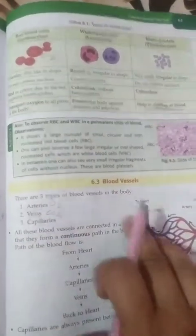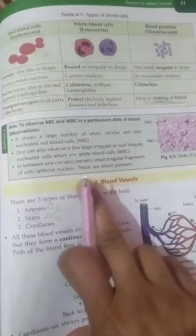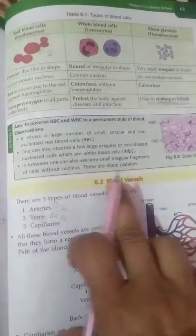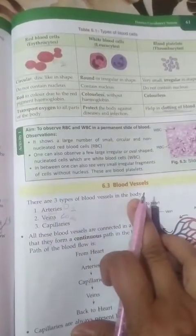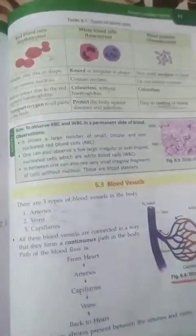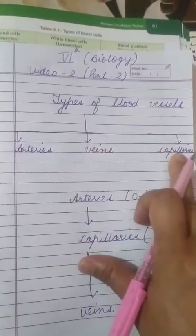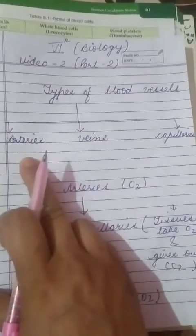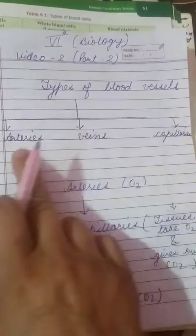Now we will do the next topic, that is blood vessels. Blood vessels are also a part of the human circulatory system. There are 3 types of blood vessels present in our body: arteries, veins, and capillaries. We will discuss each of these 3 blood vessels one by one.